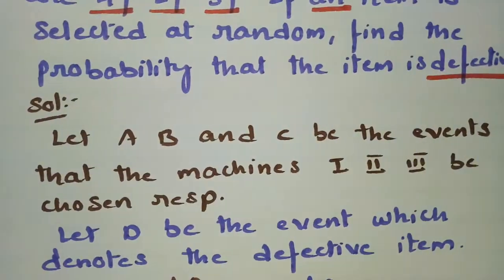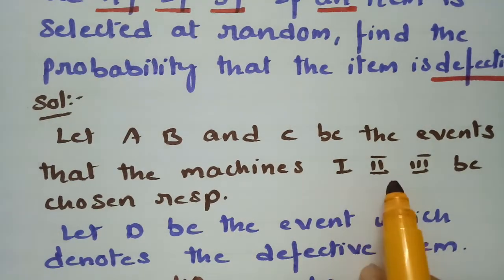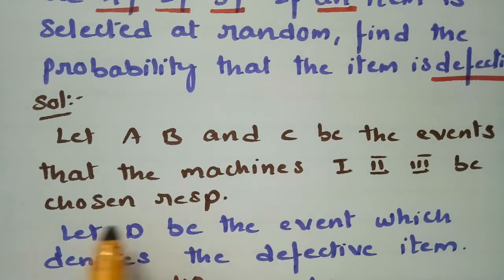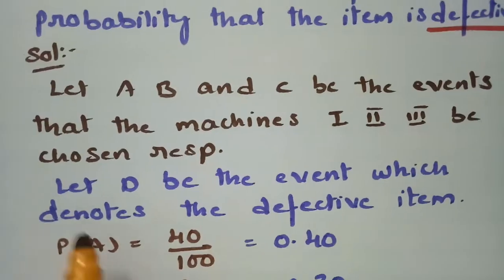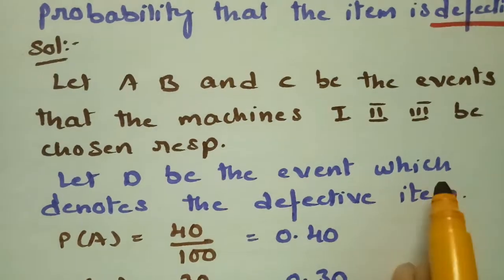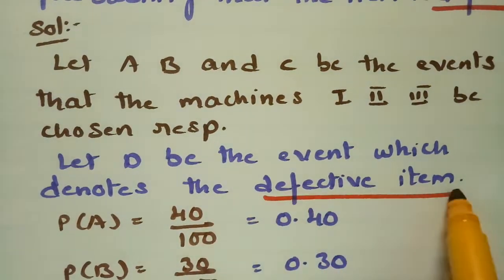Let A, B, C be the events that machine 1, machine 2, and machine 3 are chosen respectively. Let D be the event which denotes a defective item.